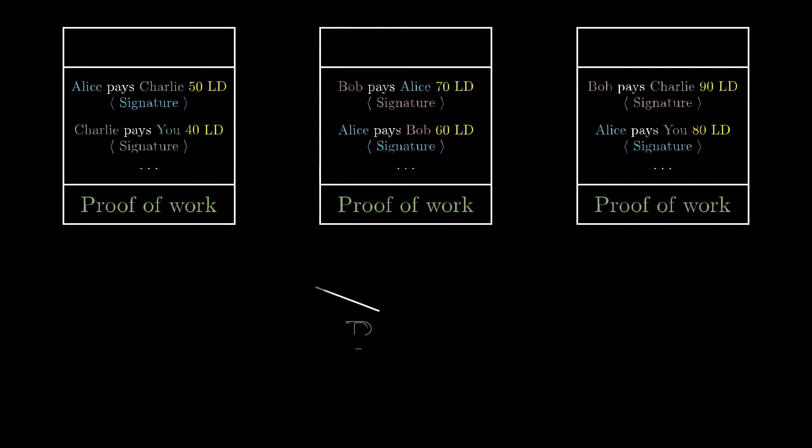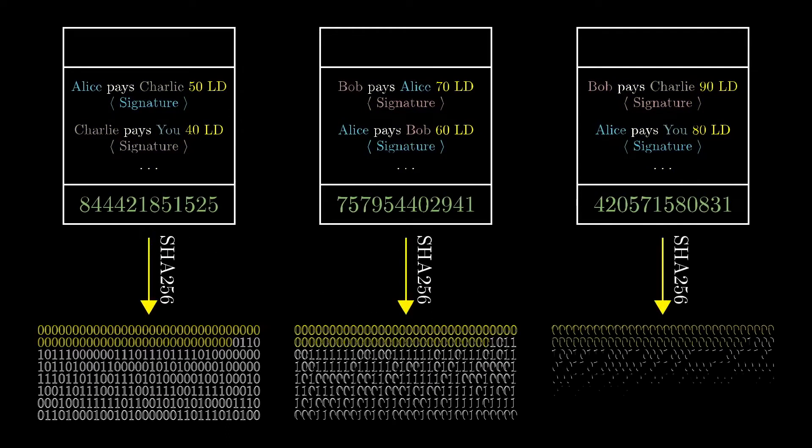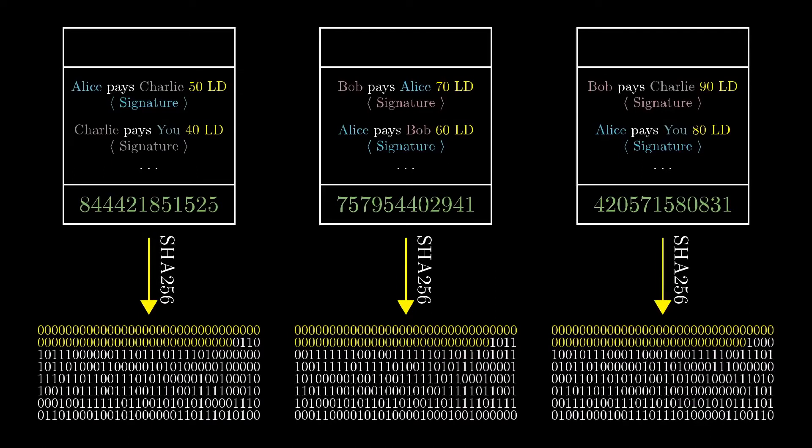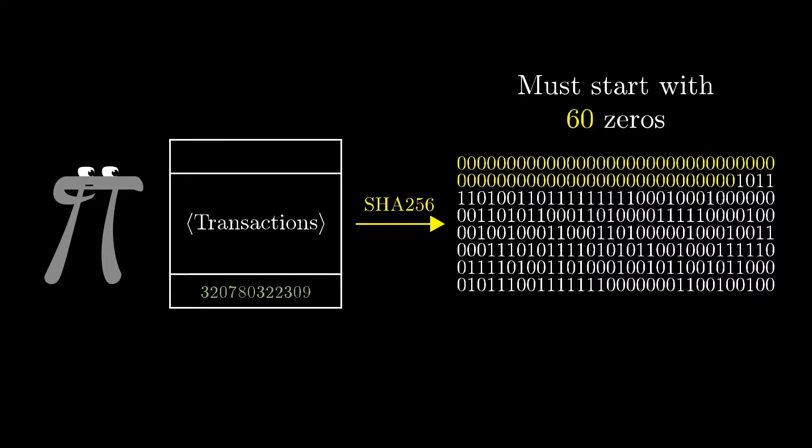The way this works is to first organize a given ledger into blocks, where each block consists of a list of transactions together with a proof of work—that is, a special number so that the hash of the whole block starts with a bunch of zeros. For the moment, let's say that it has to start with 60 zeros, but later we'll return back to a more systematic way you might want to choose that number.